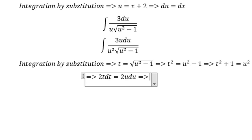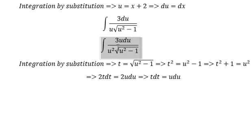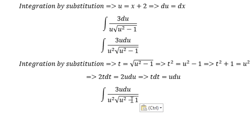We do first derivative on both sides, and we get tdt equals udu. Now we change this integral again. Udu we change to tdt.